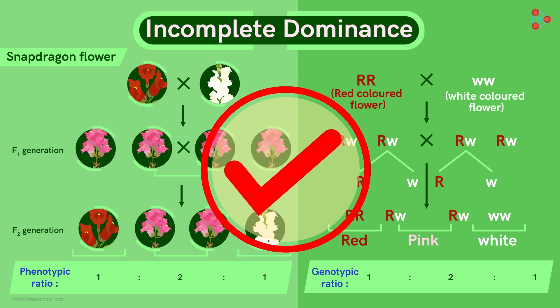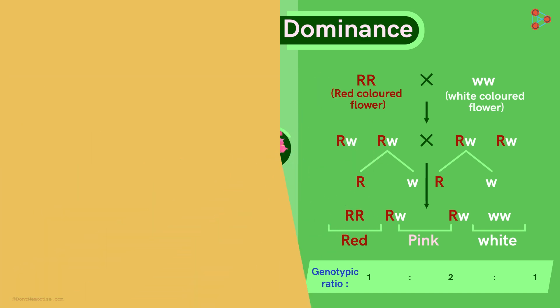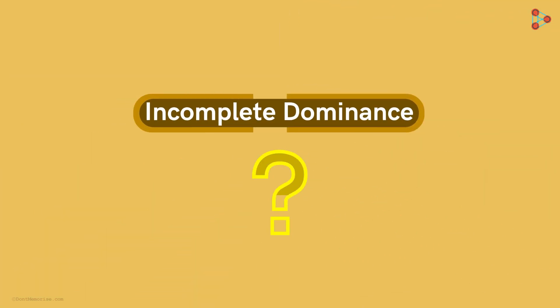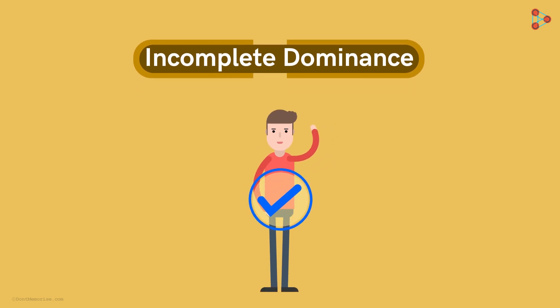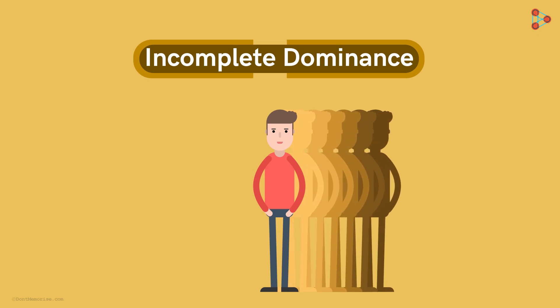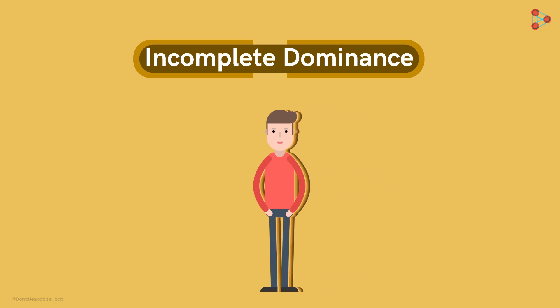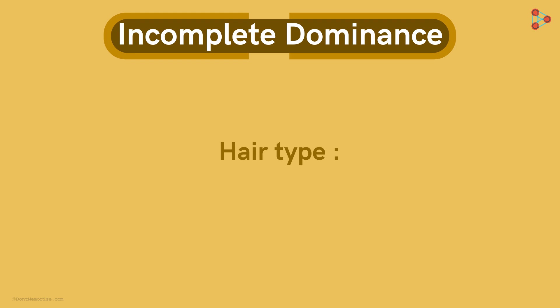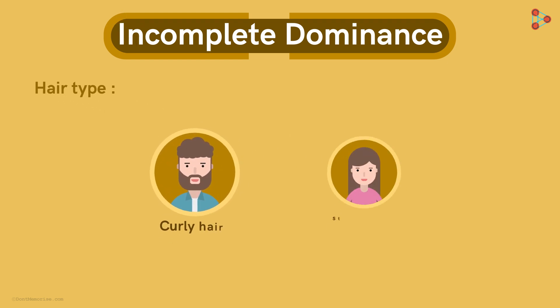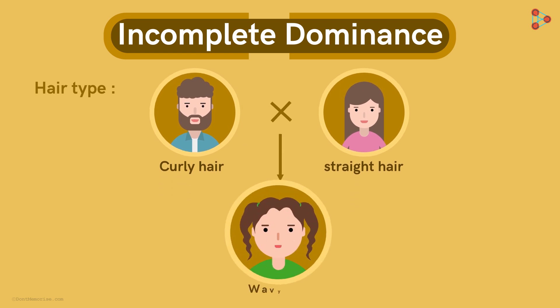Now this was about incomplete dominance in plants. Is this seen in animals as well? Oh yes, it is seen in human beings too! Out of the many characters that show this kind of pattern, hair type is the one which exhibits the pattern of incomplete dominance. Curly and straight are the two types of hair traits which we know. Crossing these types gives us the third phenotype which is wavy hair. This is nothing but an example of incomplete dominance.